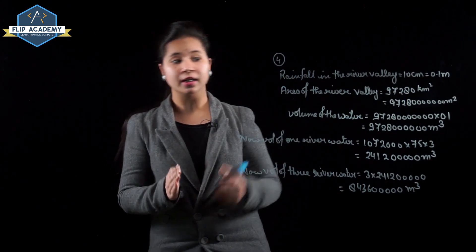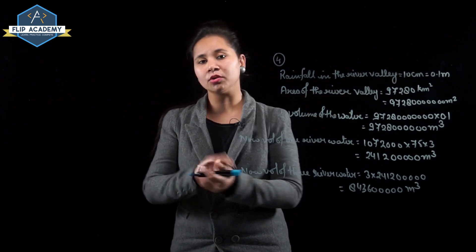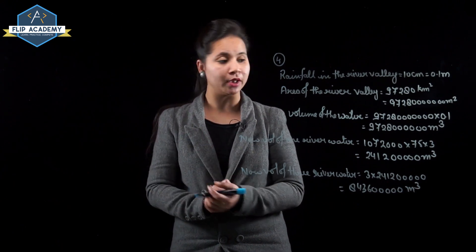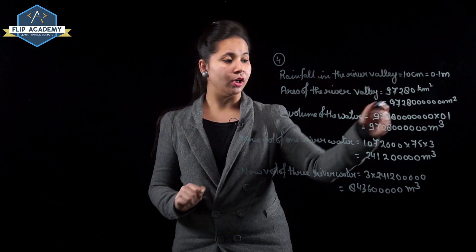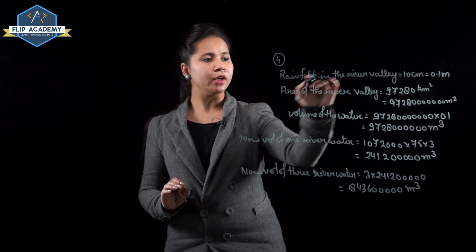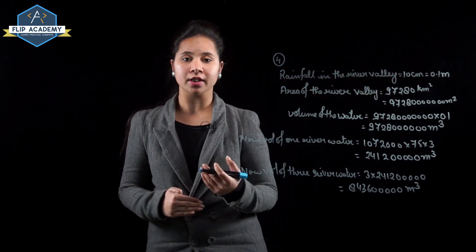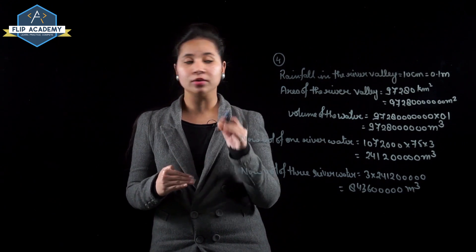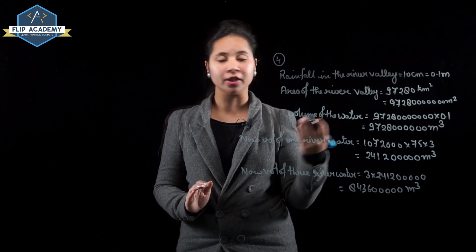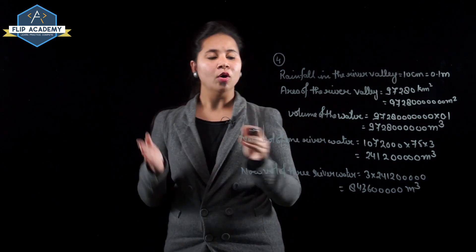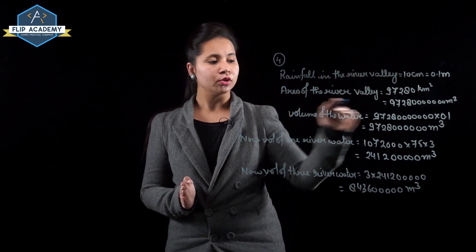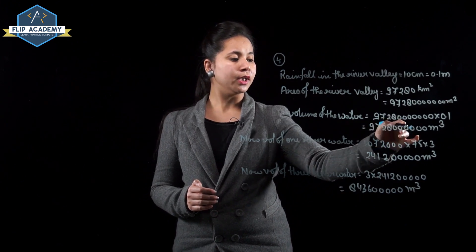Area of river valley = 97,280 km² = 97,280 × 10⁶ m² = 9,72,80,00,000 m². Rainfall = 10 cm = 0.1 m. Volume of rainfall water = area × height = 9,72,80,00,000 × 0.1 = 9,72,80,00,000 m³. We need to check if this equals three times the volume of one river.